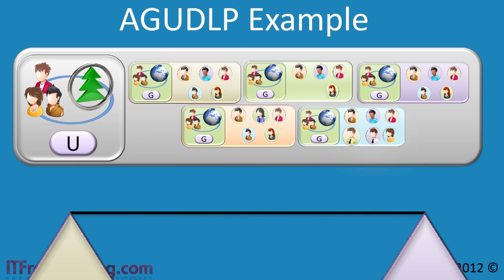So far, using AGUDLP we have been able to granularly divide up administrative control, reduce replication, and provide forest-wide control of resources.